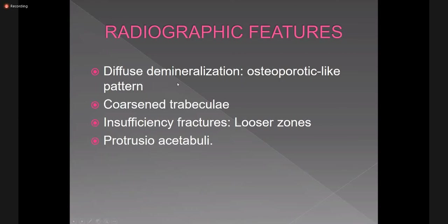The radiographic features of osteomalacia include diffuse decreased bone density. The pathognomonic feature of osteomalacia is the Looser zones, which are insufficiency fractures — incomplete fractures which are perpendicular to the axis of the tubular bone.